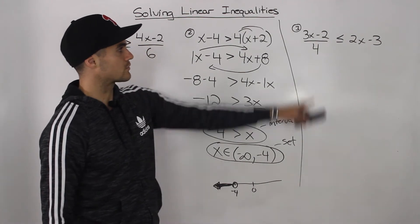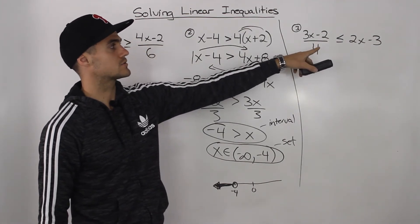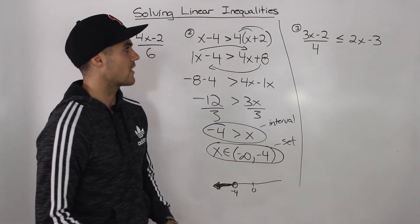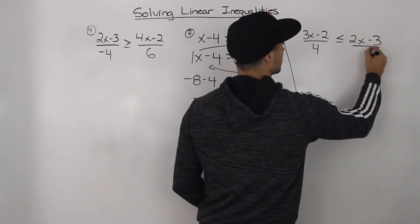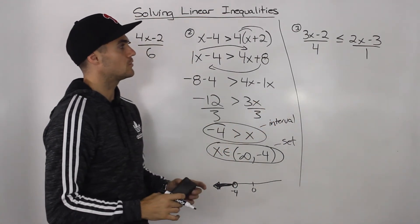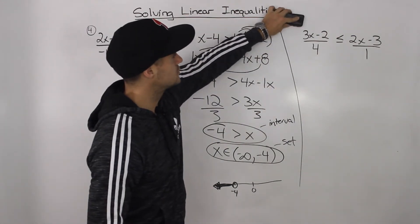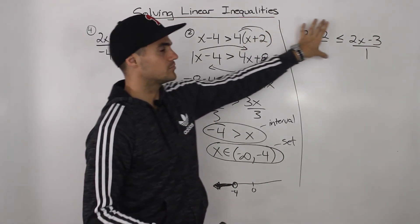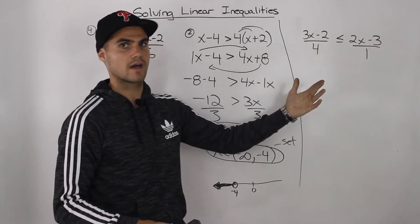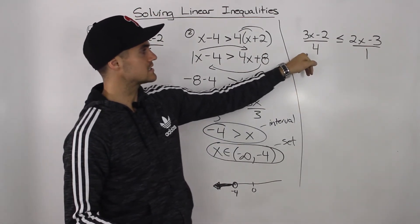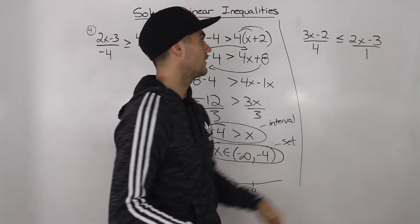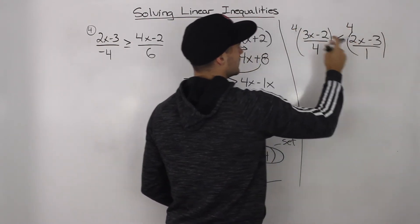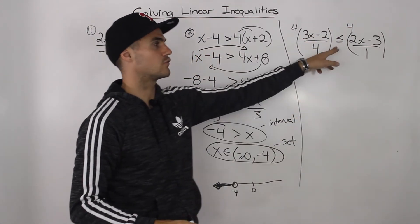Moving on to the third question. We got 3x minus 2 over 4 is less than or equal to 2x minus 3. Whenever you have a question like this where you're dealing with fractions, what you want to do is multiply everything by the lowest common denominator — like we do when solving equations, to get rid of that denominator. The value you're multiplying by, you always want to make sure it's a positive value. The lowest common denominator between 4 and 1 is going to be 4. So we'll multiply this by 4.